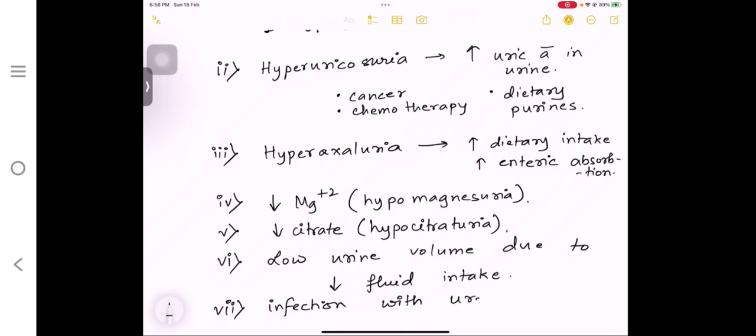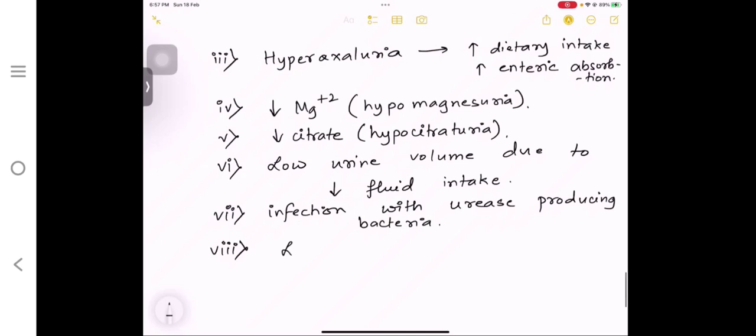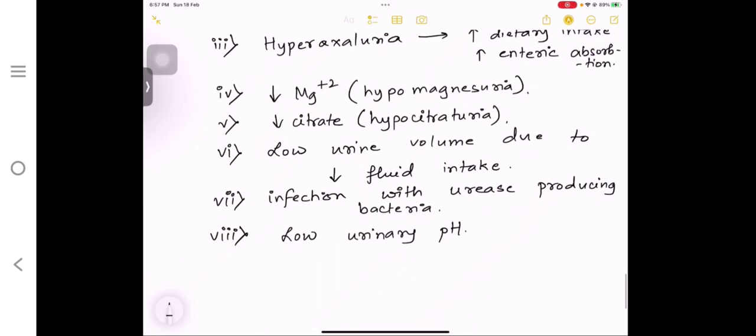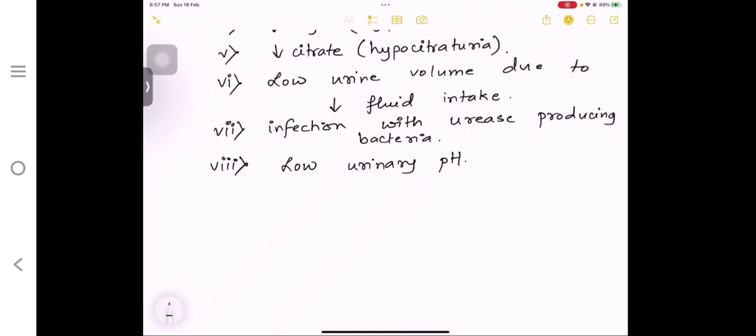Then there can be some anatomical conditions like medullary sponge kidney, pelvic ureteric obstruction. If obstruction is there, whatever stone formation or salt formation happens cannot come out—it will cause renal stones. There can be calyceal diverticuli. If there is outpouching of these calyces, there is space where stone deposition can happen. And there can be horseshoe-shaped kidney when the lower poles of the kidney are fused with each other.